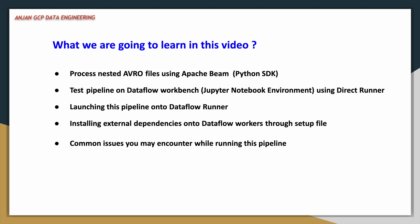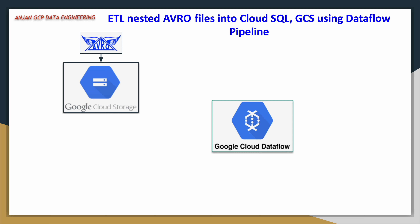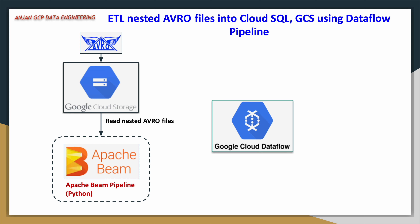Now we will move to the architecture. In the first step, I have already placed a few Avro files onto a Google Cloud Storage bucket under a specific folder. We are going to read those files into our Apache Beam pipeline. This pipeline has two parallel branches, which I will discuss in detail while explaining the code. First we will test this pipeline in our notebook environment, and then we will launch it onto Google Cloud Dataflow environment.